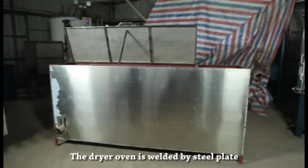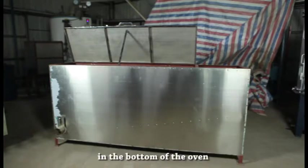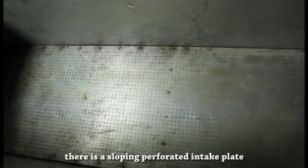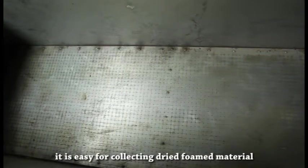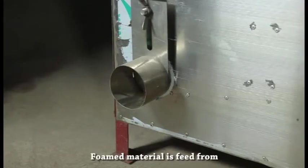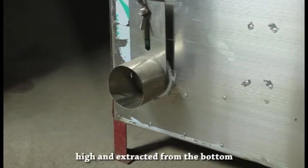The dryer oven is welded from steel plate. In the bottom of the oven there is a sloping perforated intake plate for easy collection of dry foam material. Foam material is filled from the top and extracted from the bottom.